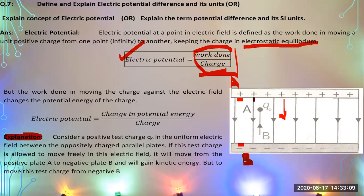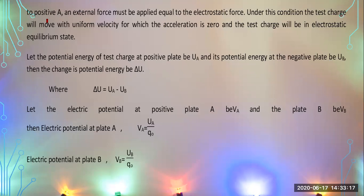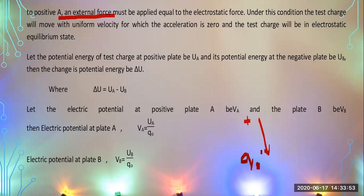At the negative side, the charge has a smaller value of potential energy. As you move it toward the positive plate, you do the maximum amount of work, and the potential energy of the charge is maximum at the positive plate. An external force equal to the electrostatic force must be applied to move the charge particle q against the electric field, from the negative to the positive side.